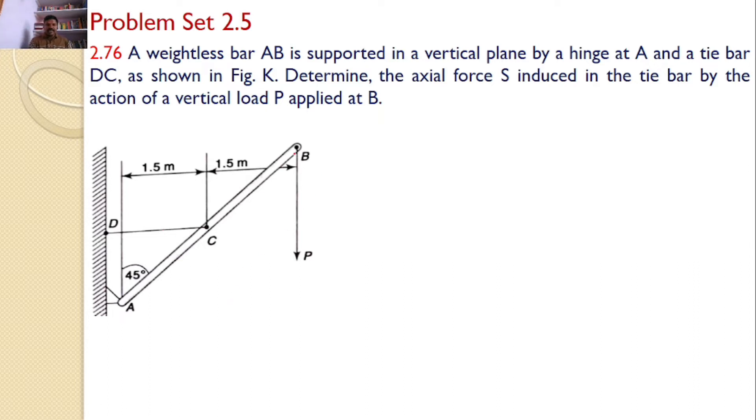For that, we will consider the free body diagram of this bar AB. Since it is a hinged support, here I can find two reactions. Let those two reactions be RAH and RAV and the force P is acting like this. Hence, there is a force P. It is also connected with a tie rod.